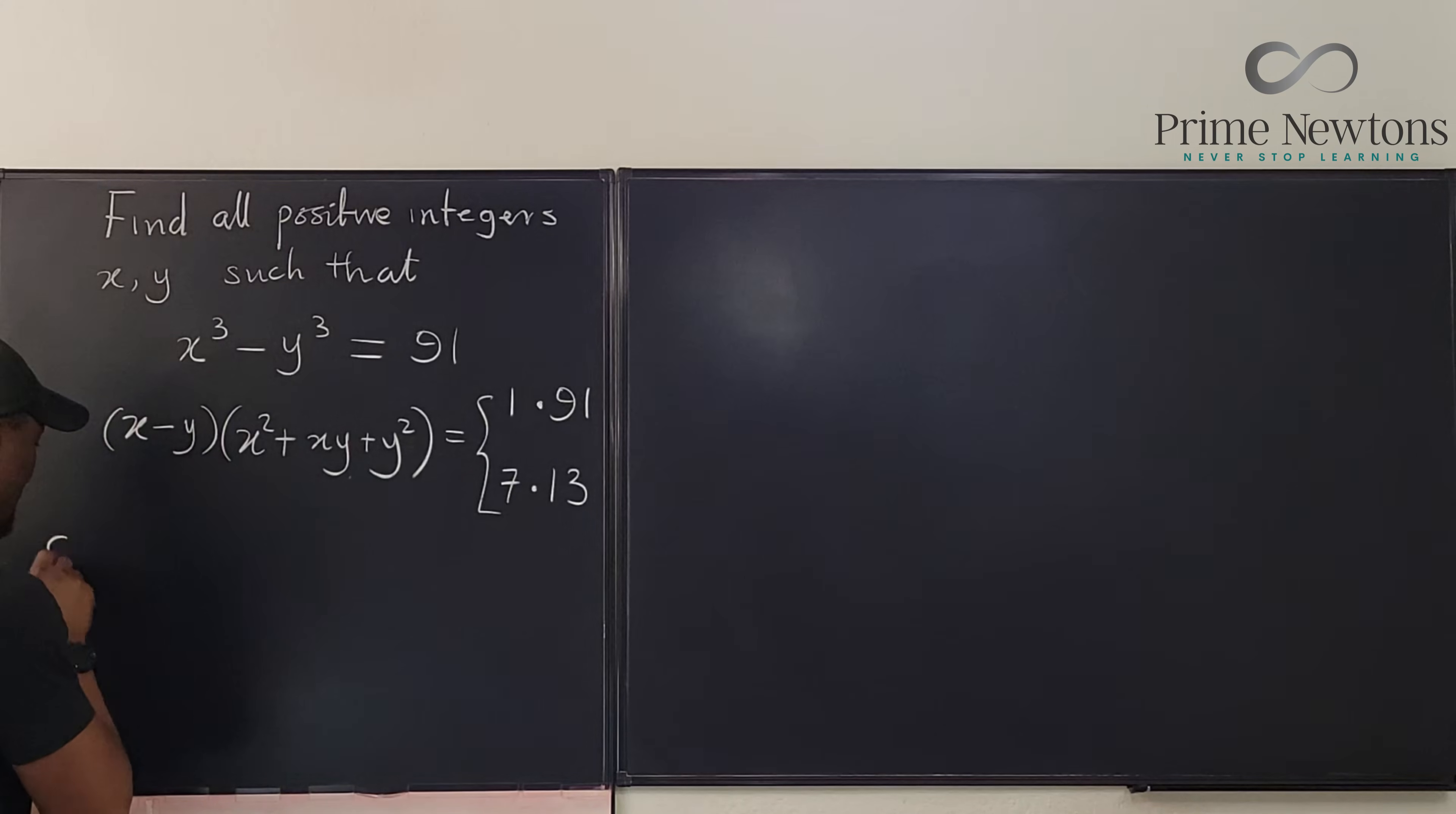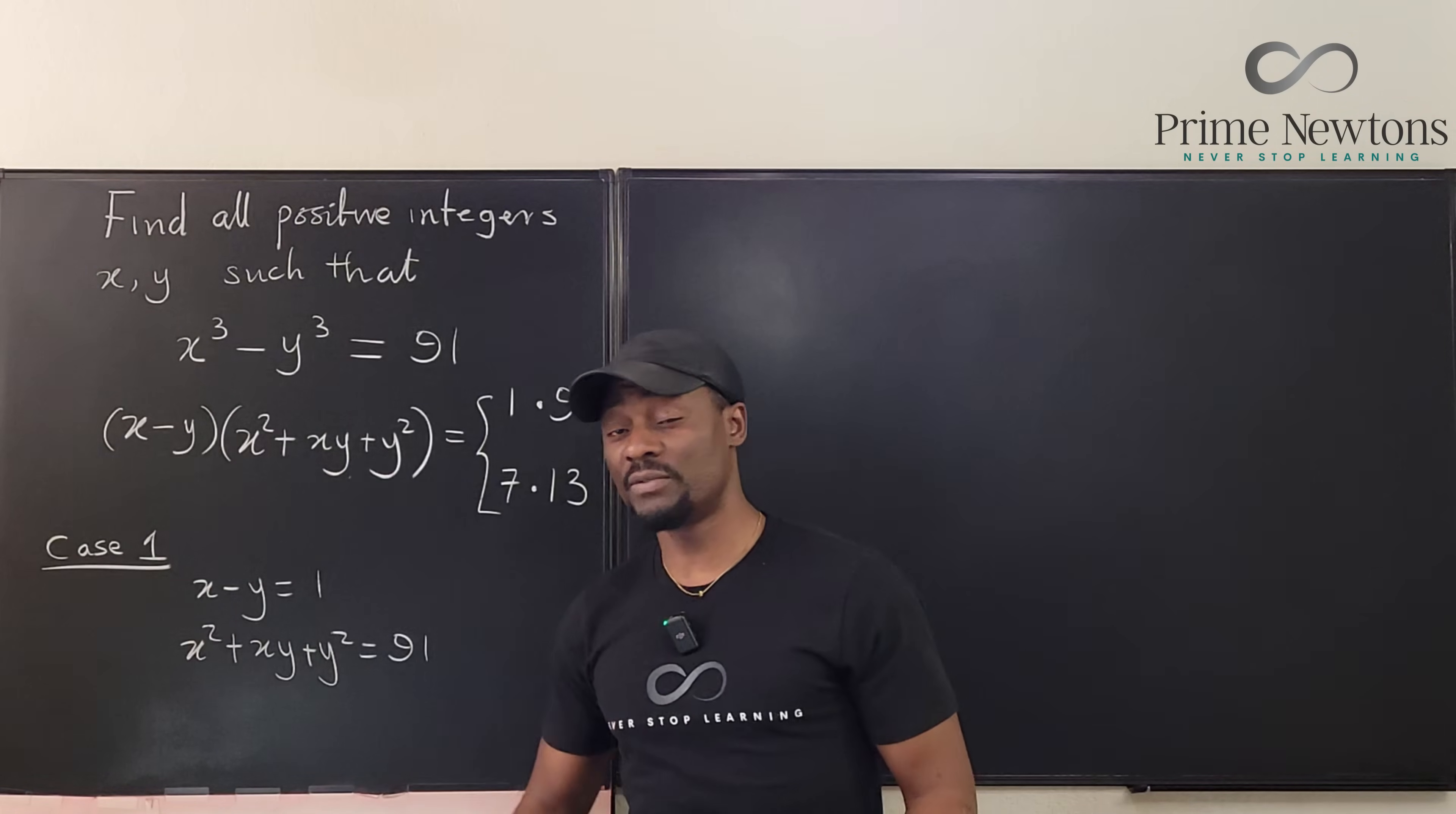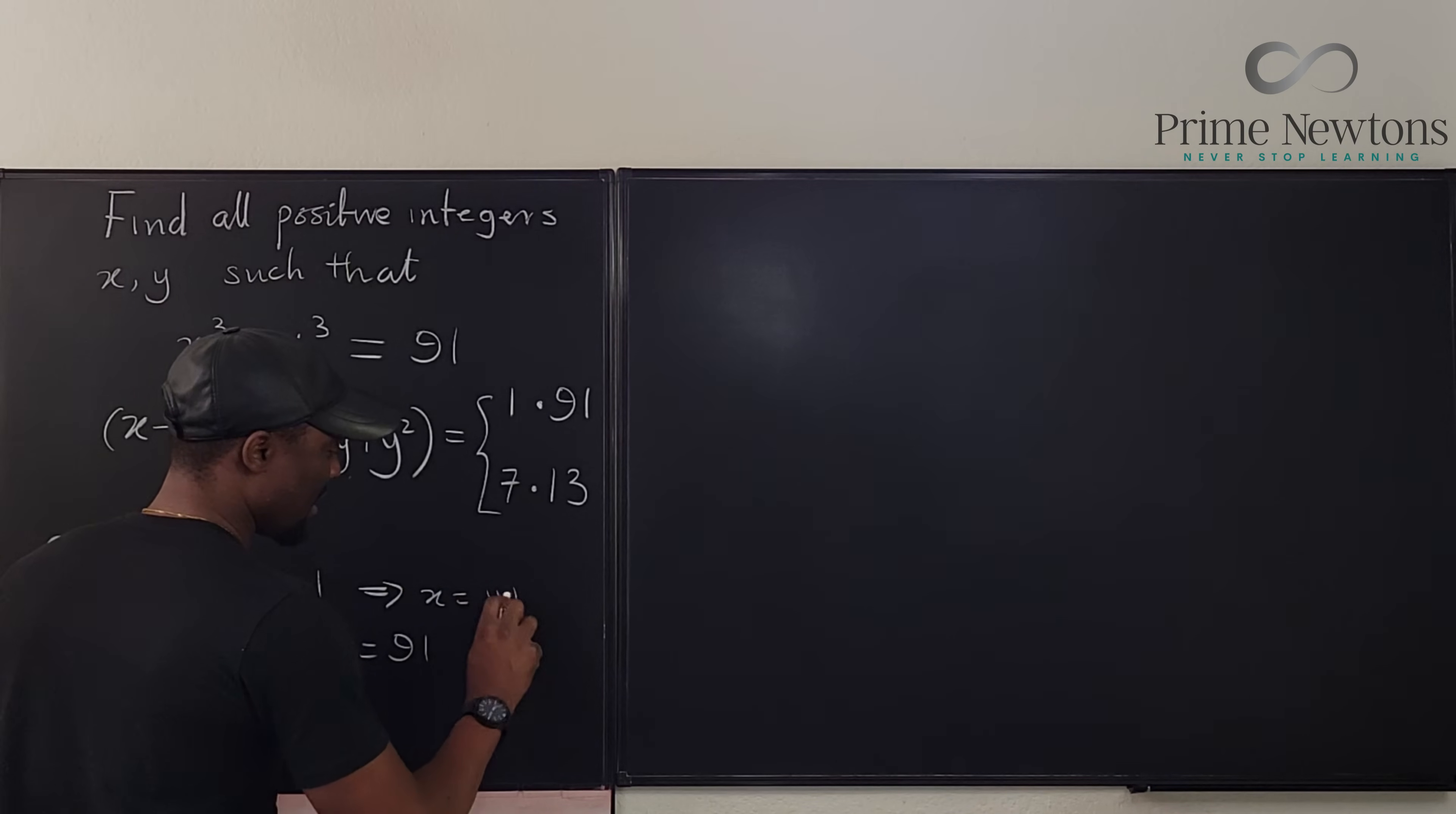So case one. We have x minus y equals 1 and then we have x squared plus xy plus y squared equals 91. So let's see if we can do some kind of substitution. Well, this is easy because from here we know that x will be equal to y plus 1. So this implies that x equals y plus 1.